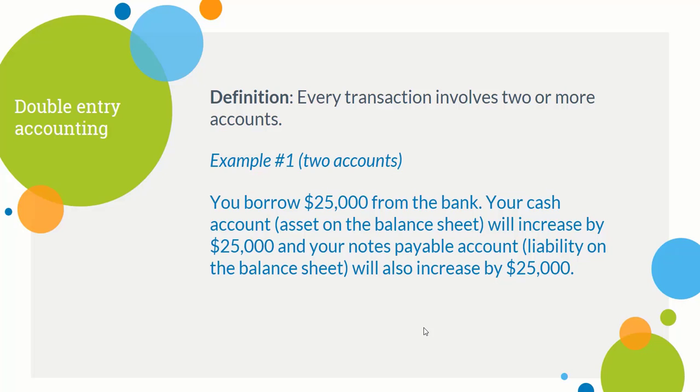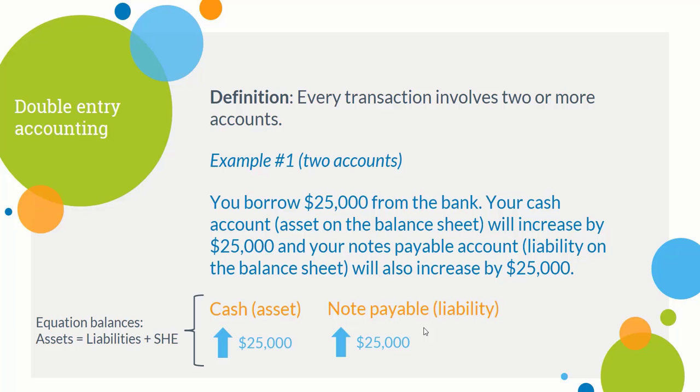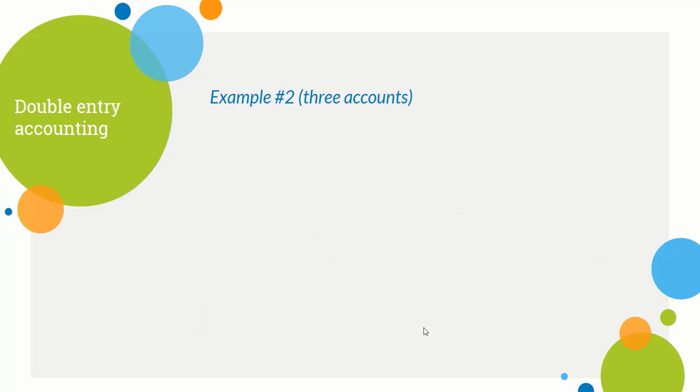Let's say you borrowed $25,000 from the bank. Your cash account — which is an asset on the balance sheet — increases by $25,000, and your notes payable — which is a liability — also increases by $25,000. That balances out the balance sheet: assets increased by $25,000 and liabilities increased by $25,000, so the accounting equation still balances. Two or more accounts are always affected by every single transaction.